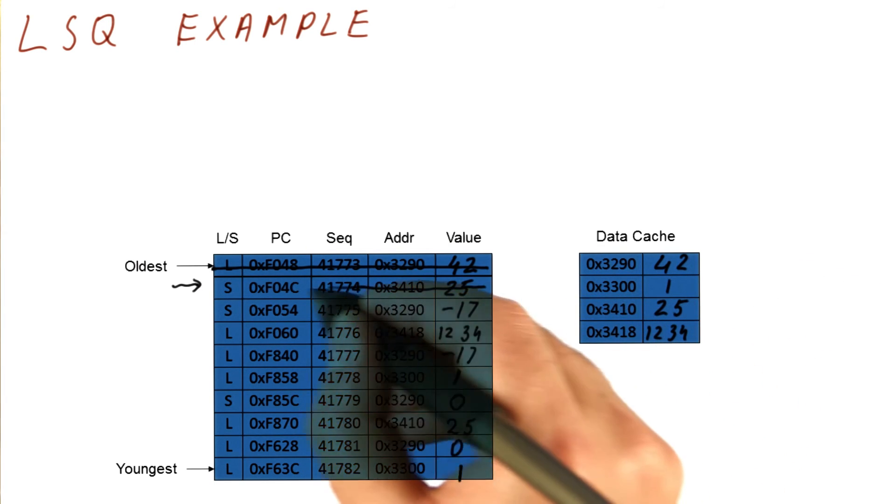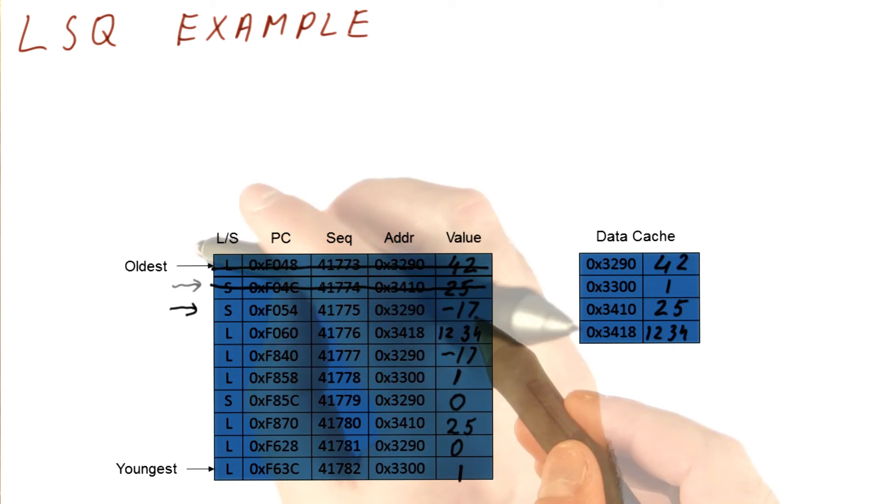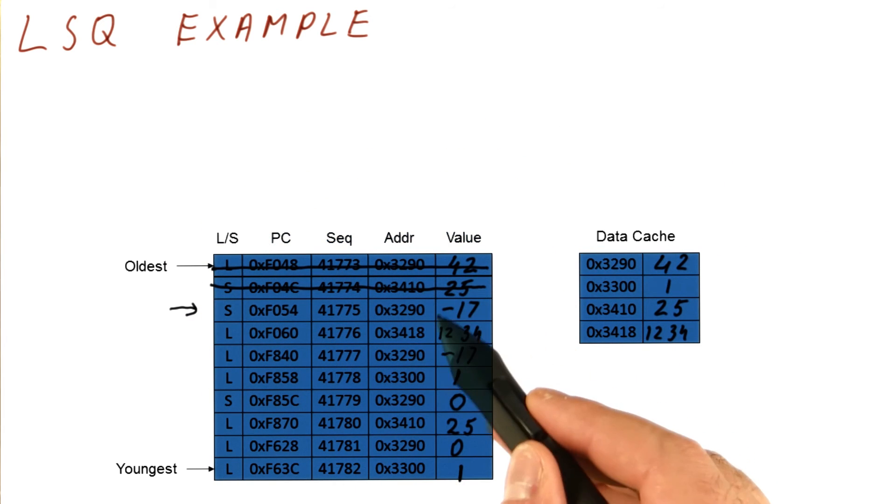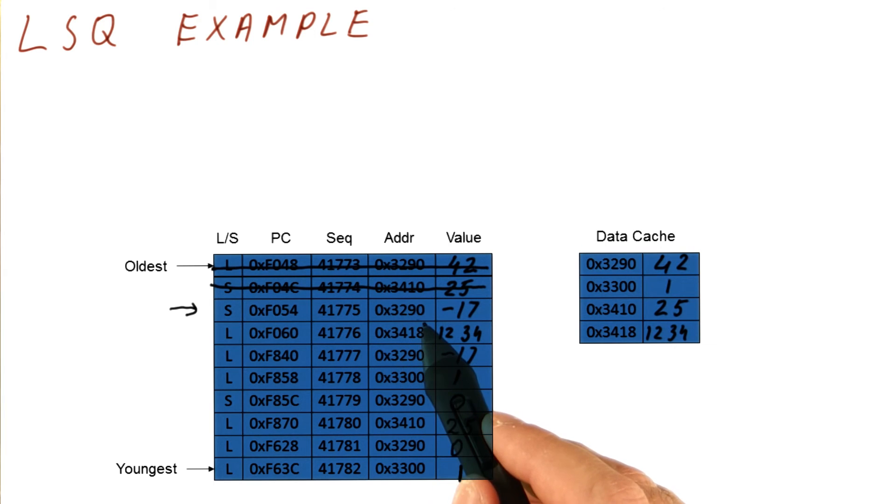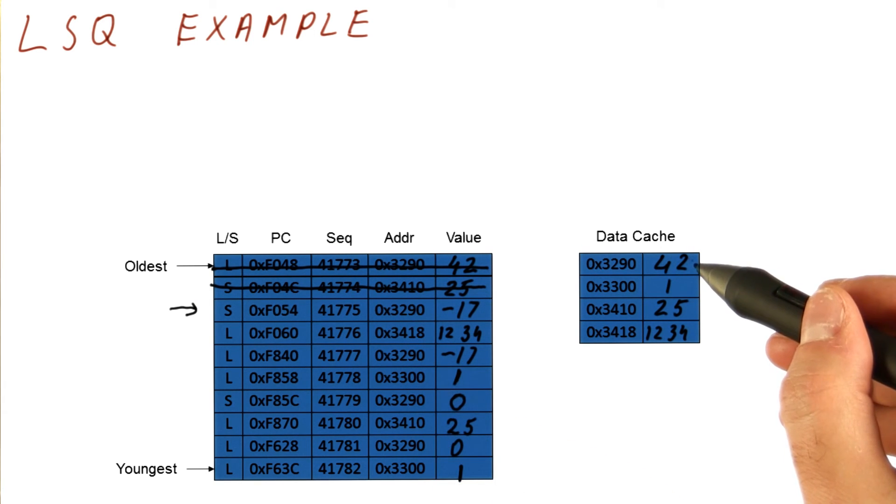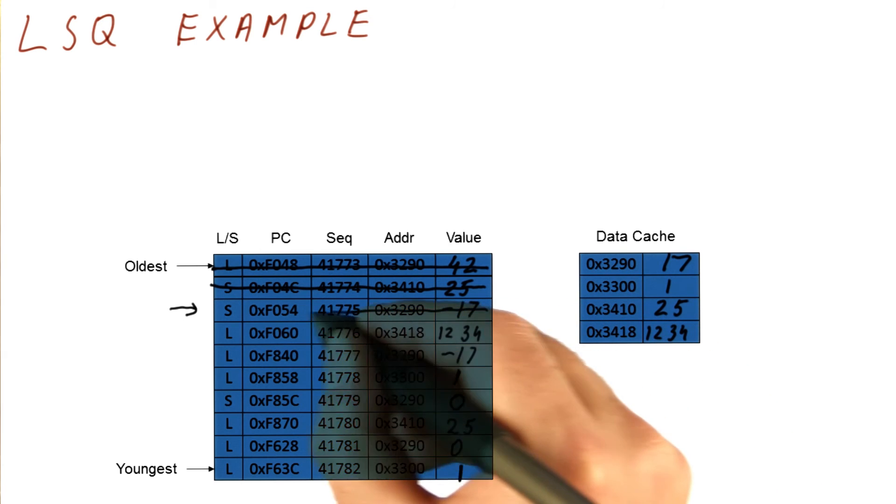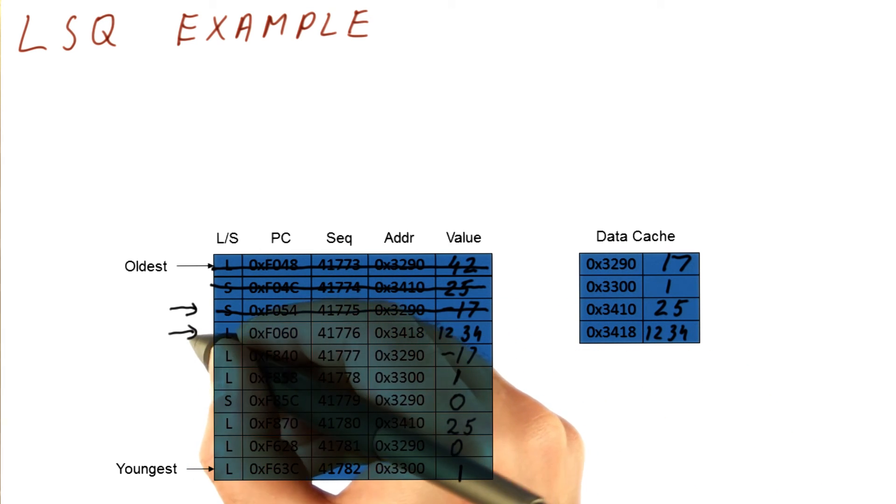And now the store can commit, and our pointer moves here. We commit another store here, so the value of minus 17 goes to location 3290. So we override this 42 with 17. Now our store is committed. We move the pointer here.